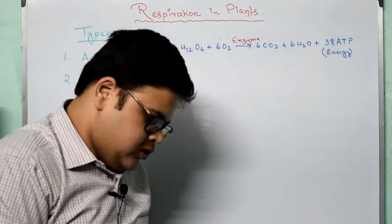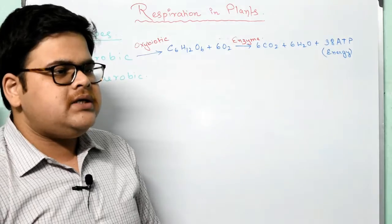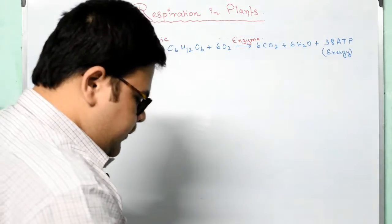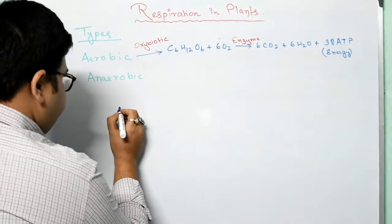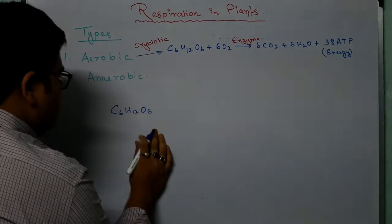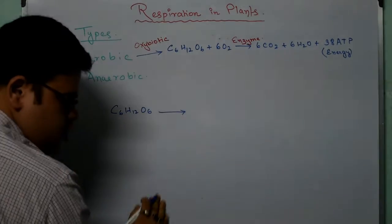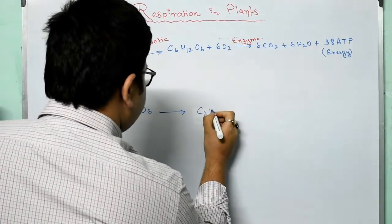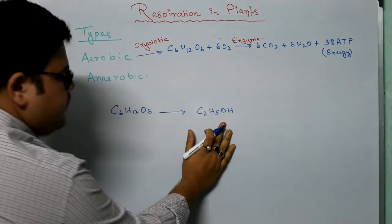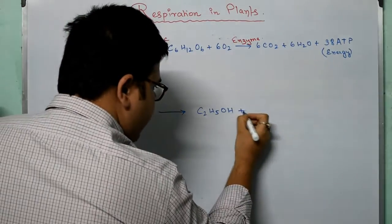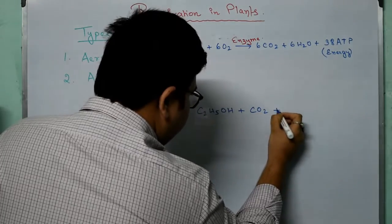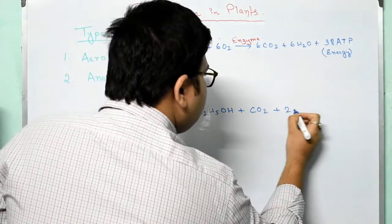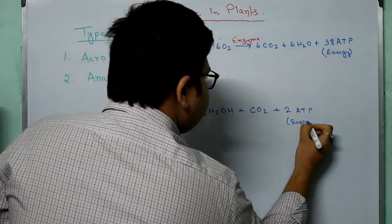Now we will study anaerobic respiration. Anaerobic respiration is the breaking down of the glucose molecule without oxygen, or in absence of oxygen. The equation is: C6H12O6 breaks down to ethanol (C2H5OH) plus CO2, and here the energy released is only 2 ATP.